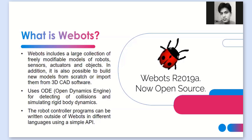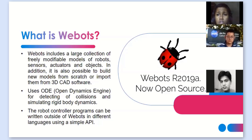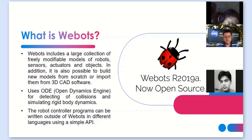Webots has a large collection of models that we can use to make robots — the same components used in real life. We start by making a model with the help of modifiable models present in Webots. There are also sensors, actuators, and other components that can be simulated according to our needs. Webots uses the Open Dynamics Engine, which handles all the physics, so we don't need to worry about that.